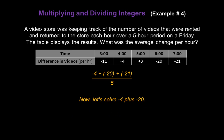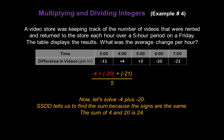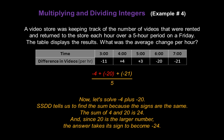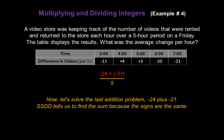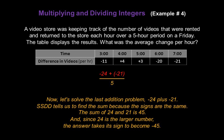Next, let's solve negative 4 plus negative 20. SSDD tells us to find the sum this time because the signs are the same — both negative. The sum of 4 and 20 is 24, so the answer becomes negative 24. Now the numerator is negative 24 plus negative 21. SSDD tells us to find the sum again because the signs are the same. The sum of 24 and 21 is 45, so the answer becomes negative 45. Our fraction is now negative 45 over 5.